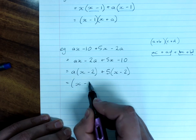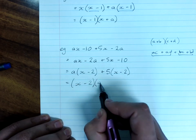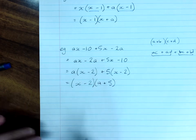Take the first bracket out the front. Put the remaining factors in the second bracket.